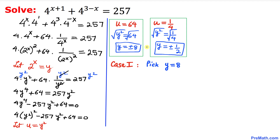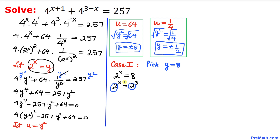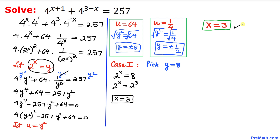Case 1: y = 8. Since y = 2^x, we have 2^x = 8 = 2³. The bases are the same, so we equate exponents: x = 3. Our solution for case 1 is x = 3.